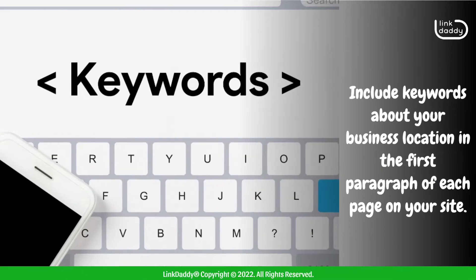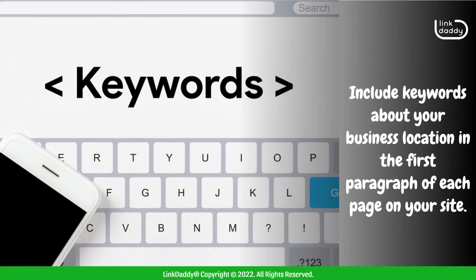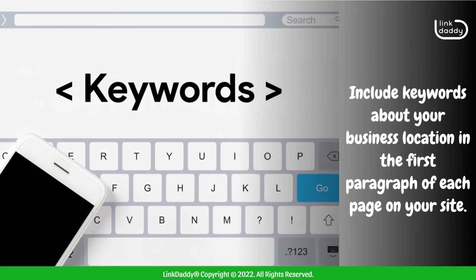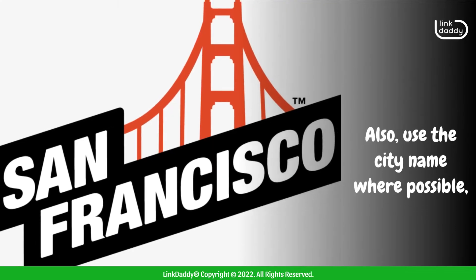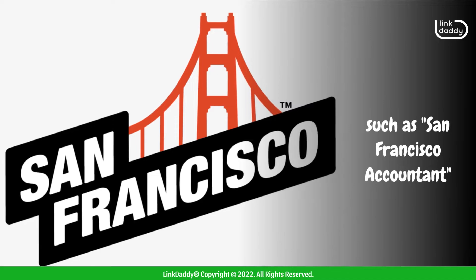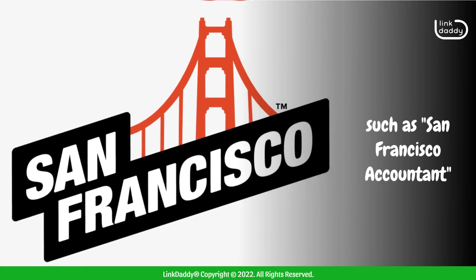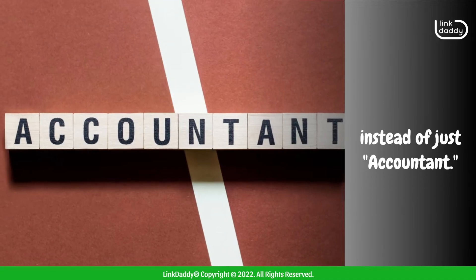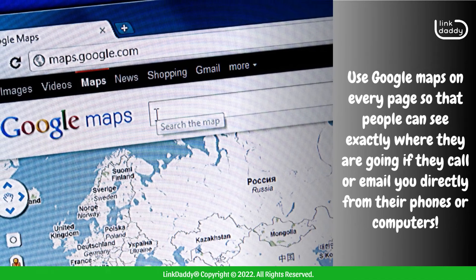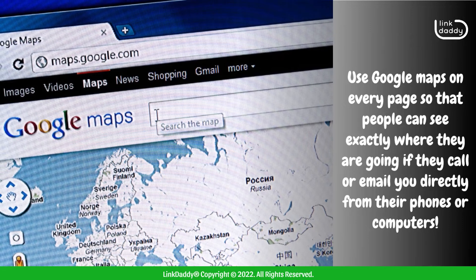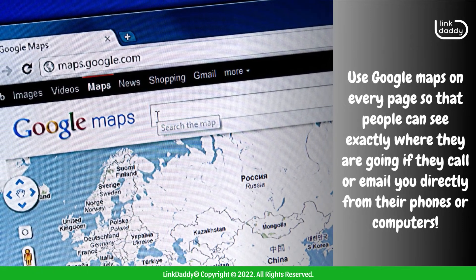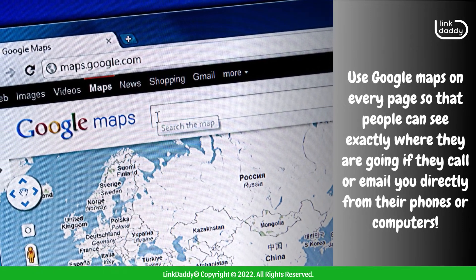Include keywords about your business location in the first paragraph of each page on your site. Also, use the city name where possible — such as 'San Francisco Accountant' instead of just 'Accountant'. Use Google Maps on every page so that people can see exactly where they are going if they call or email you directly from their phones or computers.